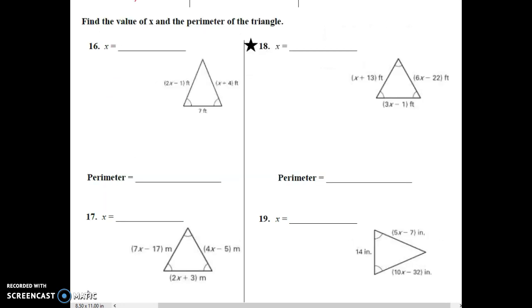If we jump ahead to questions 16, 17, 18, and 19, they ask us to find the value of x, but they also ask us to find the perimeter of the triangle. Remember, the perimeter is where you add all of the sides. It is the sum of the length of all the sides. So we have different kinds of triangles here, and we're going to find out what x is first and then populate the perimeter. The example that we're going to try is question 18.